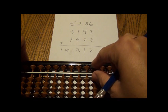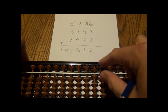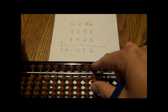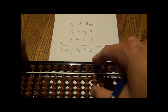This would be five. Five plus one is six. Five plus two is seven. Five plus three is eight. Five plus four is nine.